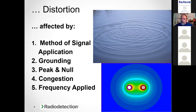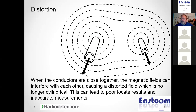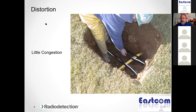A signal on one structure bleeds off onto another, creating distortion of the magnetic field. What creates the magnetic field? Electrical current put onto that pipe or cable, or current already carried on it. What causes distortion? How we're putting a signal on it, where we're grounded, what antennas we're using, underground congestion, frequency, and power. Two utilities carrying magnetic fields physically close together can blend and distort with one another.